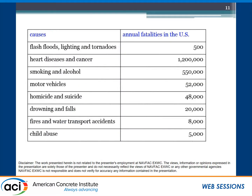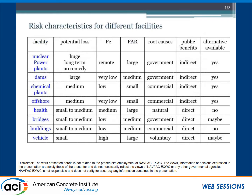Looking at daily life risk in context: annual fatality data in the U.S. shows that about 500 people die from tornadoes. With a population of about 500 million, that's a rate of about 1 × 10⁻⁶. People die from smoking, alcohol, disease, and motorcycle traffic at much higher rates. The rate of dying from driving is much higher than dying from a building collapse. Yet we still maintain very high standards for buildings, because we have to satisfy public opinion.